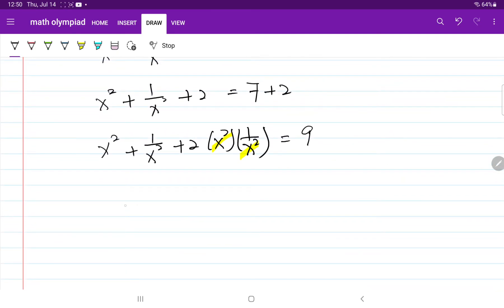Rewriting this, now I have x plus 1 over x squared equals 9. Taking the square root on both sides,